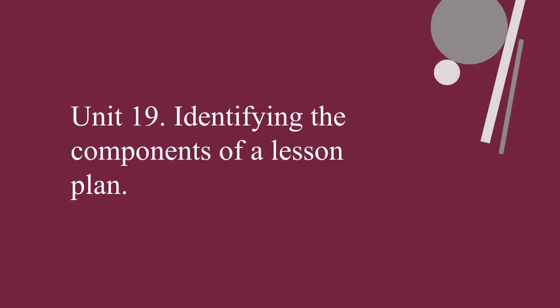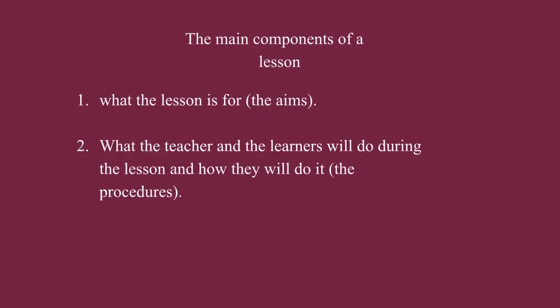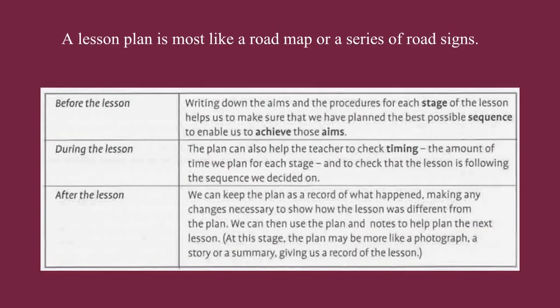Unit 19: Identifying the Components of a Lesson Plan. The main components of a lesson plan show us what the lesson is for — which means the aims — and secondly, what the teacher and the learners will do during the lesson and how they will do it. A lesson plan shows us where we are going and how we are going to get there. Before the lesson is about establishing the aims and procedures. During the lesson is knowing the amount of time for each stage. After the lesson is about keeping the plan as a record.